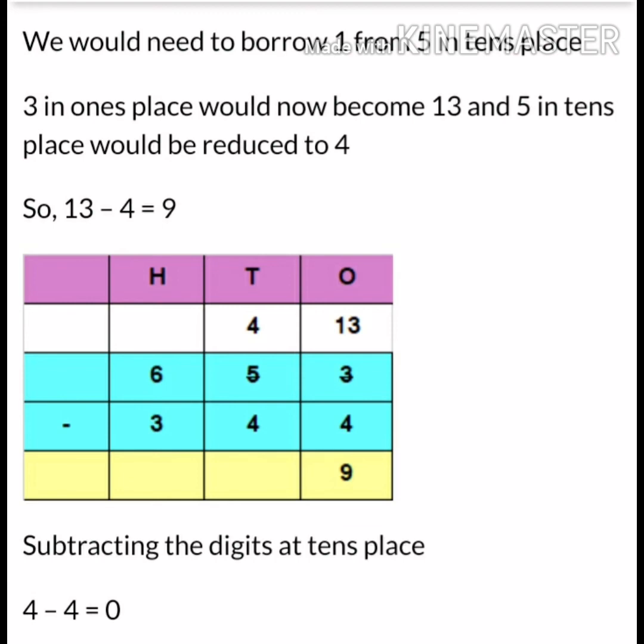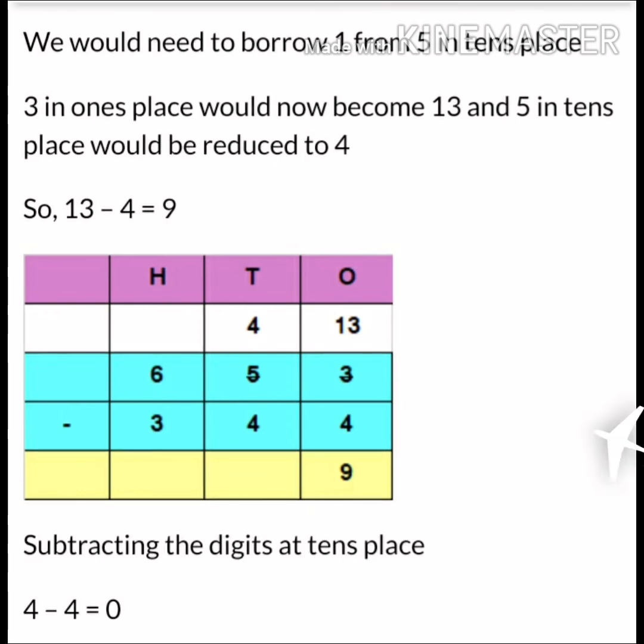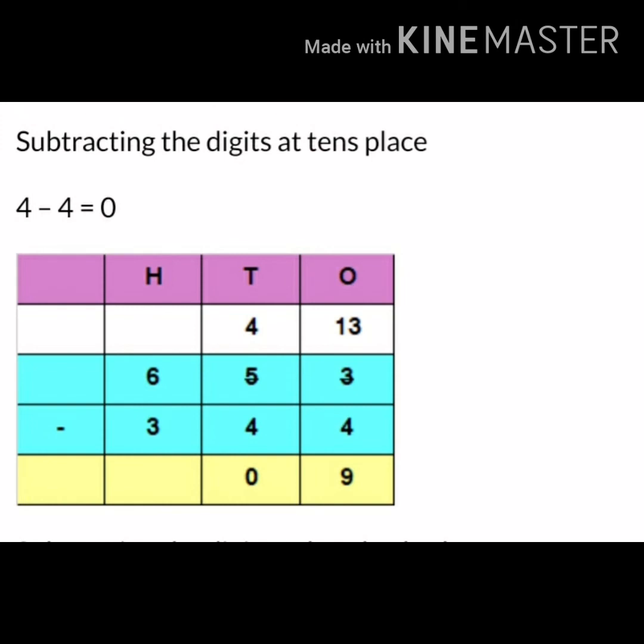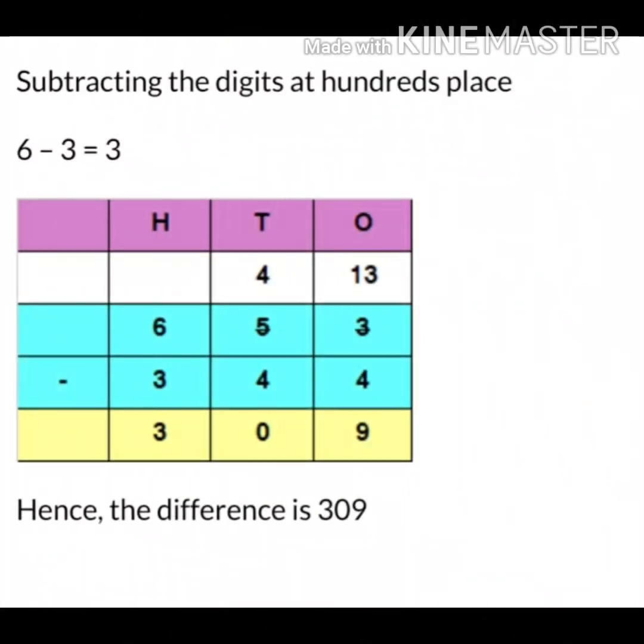After finishing the ones place, we will go to the digit at tens place. So now subtracting the digit at tens place. 4 minus 4, it gives you 0. Now we'll come to subtracting the digits at hundreds place. What are the numbers in hundreds place? 6 minus 3. 6 minus 3 gives you 3. Hence the difference is 309.